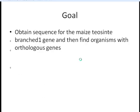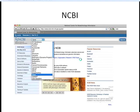Alright, so let's get started with navigating NCBI. Our goal — say we have our favorite gene, and that gene is Teosinte branched 1 — is to find all other organisms with orthologues to that gene. The first thing we need to do is find the sequence for our favorite gene, and that's what we're going to start with in NCBI.